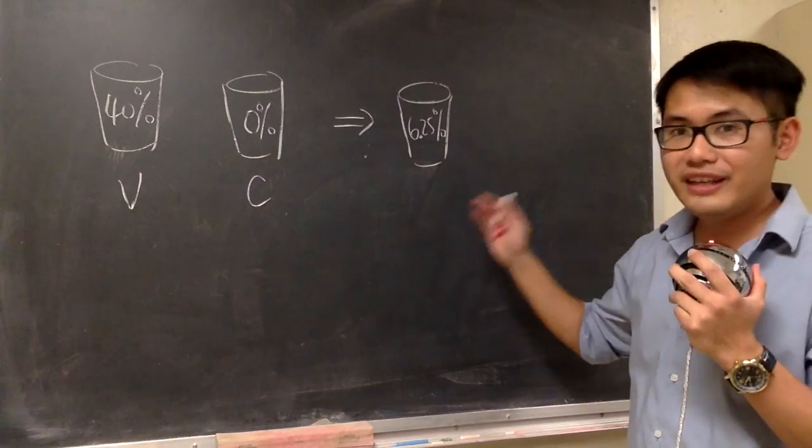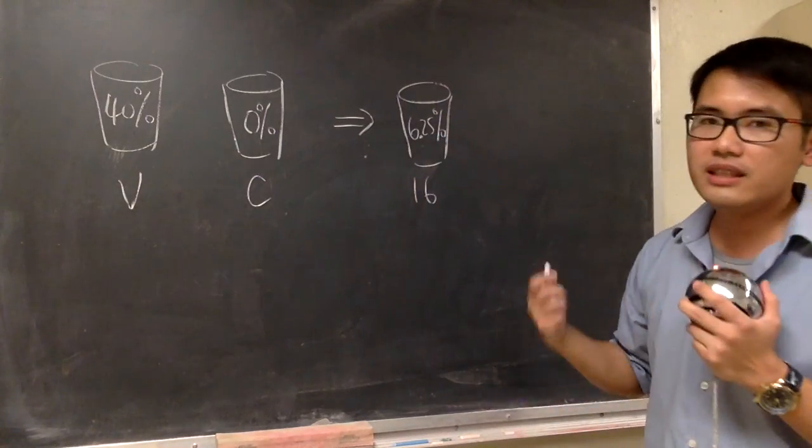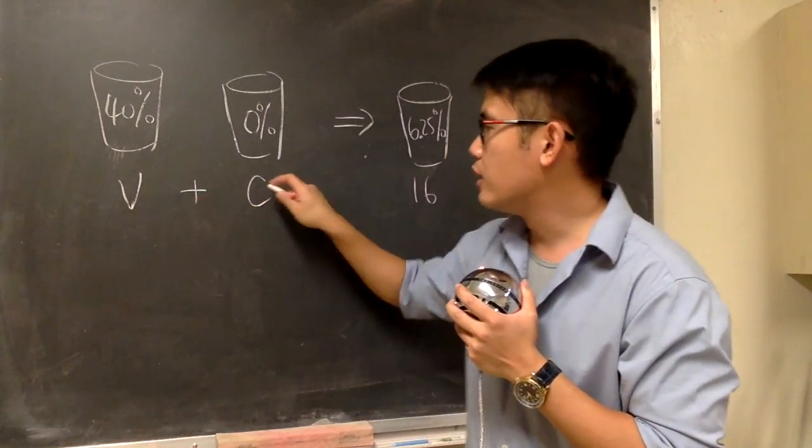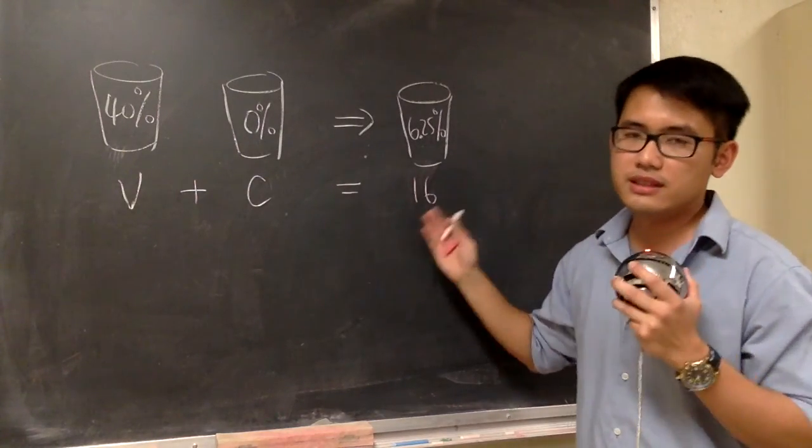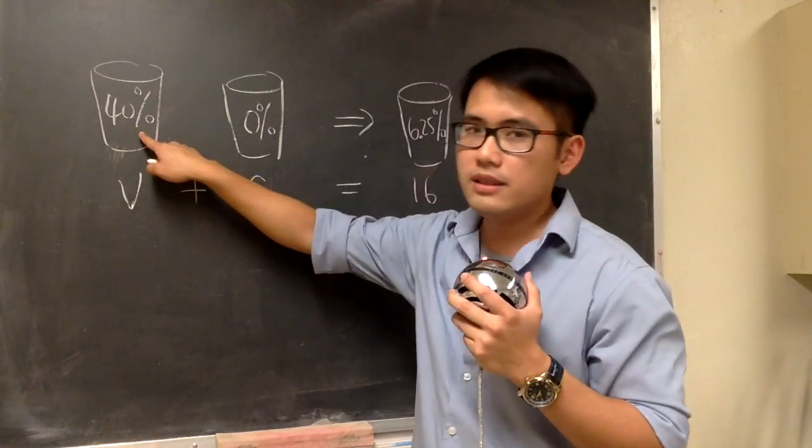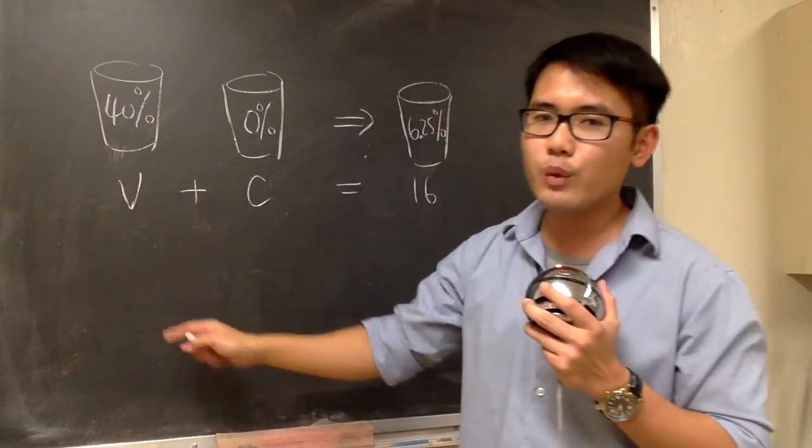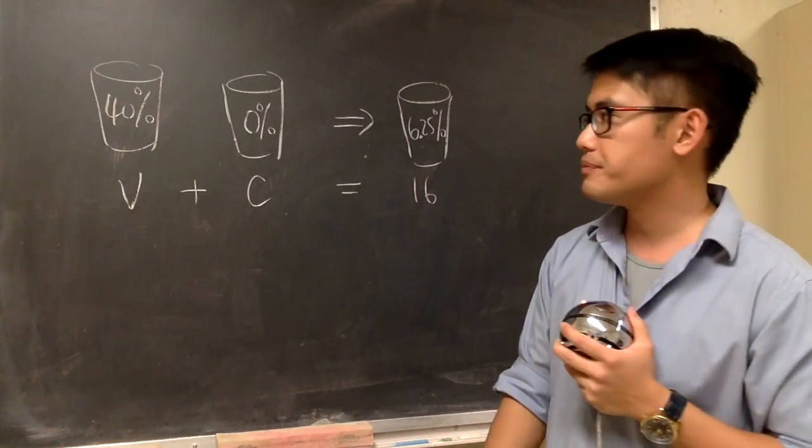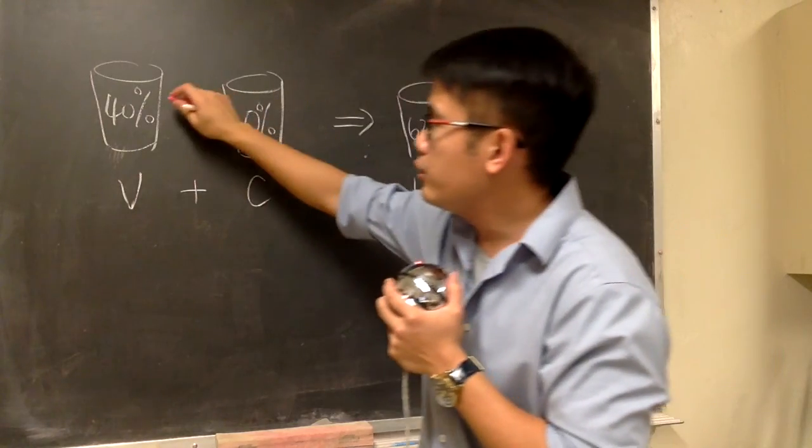And how about for this? At the end, we know for the final, we want to have 16 ounces. And we also know, when we add the vodka and cranberry juice together, we must have a total of 16 ounces. And now, what's next? Well, this is the alcohol concentration. We are going to multiply this with the amount, so that we can end up with the actual alcohol. Actual amount of the alcohol. But before we do that, let's change all the percentage right here to decimal.